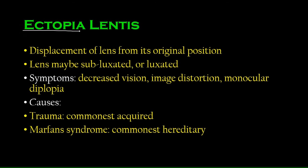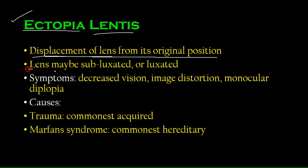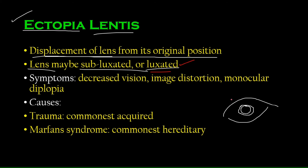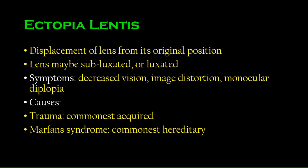So ectopia lentis is a displaced lens — displacement of the lens from its original position. The lens may be subluxated or luxated. If you dilate the pupil and cannot see the lens at all because it has moved entirely out of view, that is a fully luxated lens. If you can see part of the lens but the other half is hidden, that lens is subluxated.